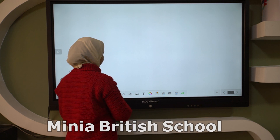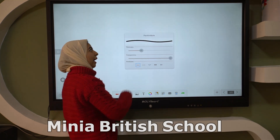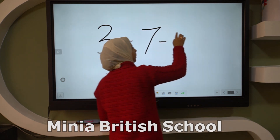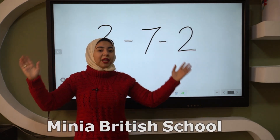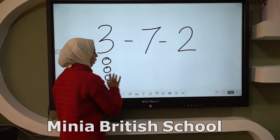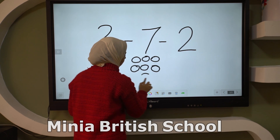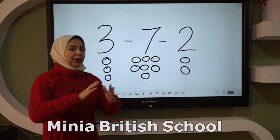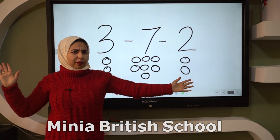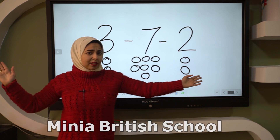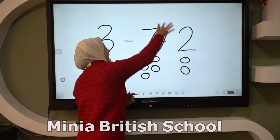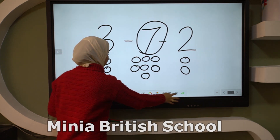When I have three, seven, and two — which one is the biggest number? Think! Three or seven or two? Is it three? No. Is it two? No. So what is the biggest number? Seven! Excellent! Seven is the biggest number.